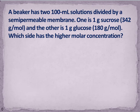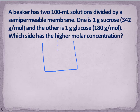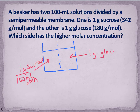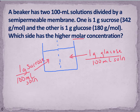Now let's look at an example. A beaker has two 100 ml solutions divided by a semipermeable membrane. On one side we have one gram of sucrose in 100 ml of solution, and on the other side we have one gram of glucose per 100 ml of solution. This tells me the mass of these substances, not the concentration in terms of molarity. I want to find which one has the higher concentration and which one has the lower concentration. I can actually calculate the molarity, but I don't actually need to.